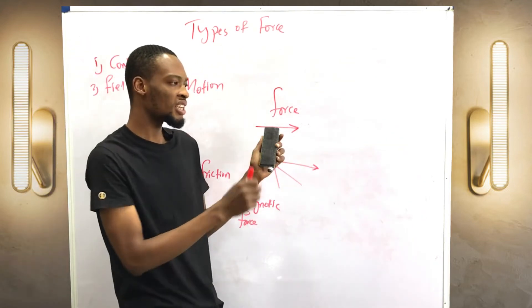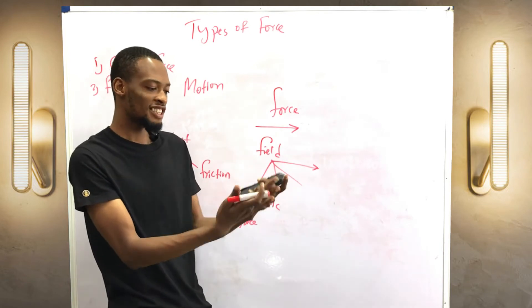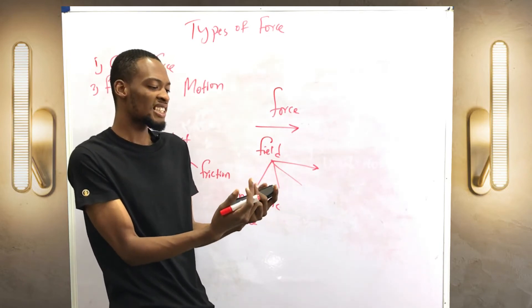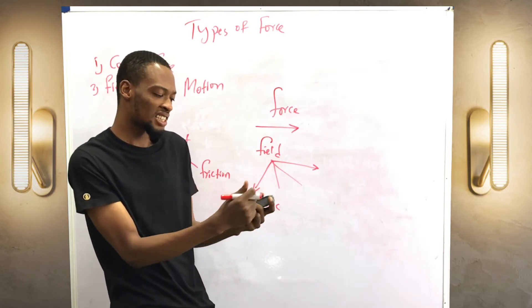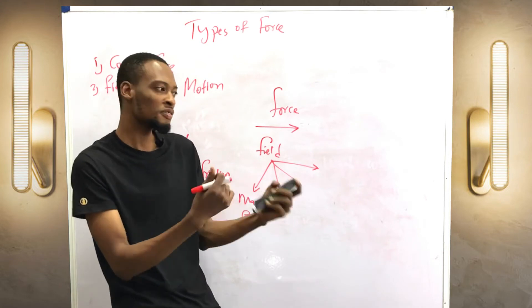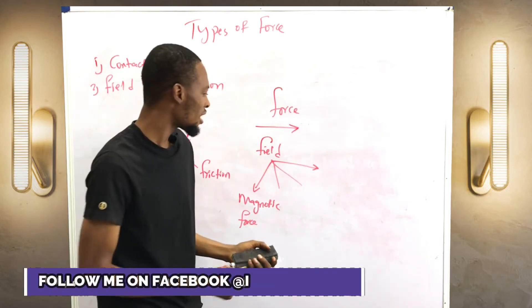Magnetic force is a field force. For example, when you keep an iron nail here and there is a magnet here, you notice that the magnet attracts the iron. So they look for each other. It jumps and hangs on the iron.